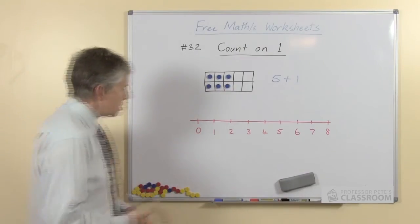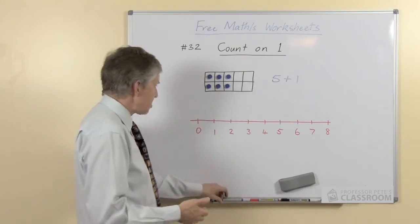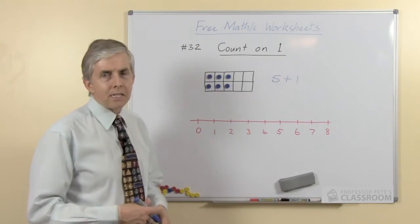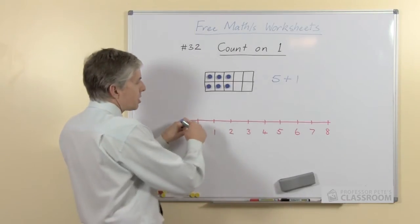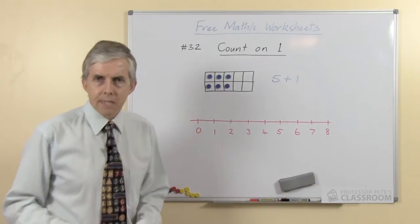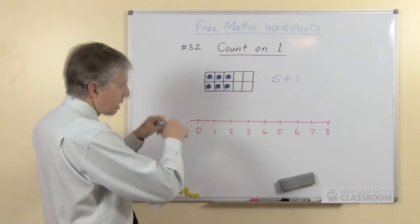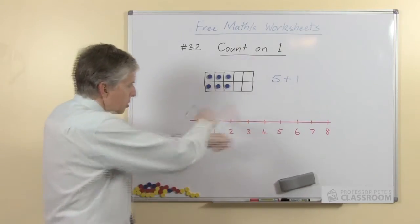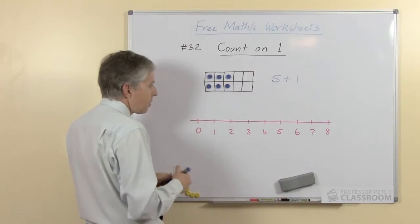Okay, so that's the 10 frame for counting on. The number line works in a similar sort of way except of course it's a purely linear representation, it's all in one dimension, it's in a long straight line. We never double up and come back underneath as with the 10 frame.